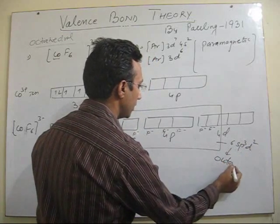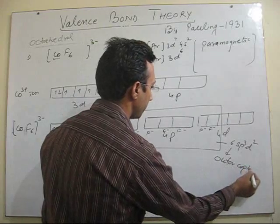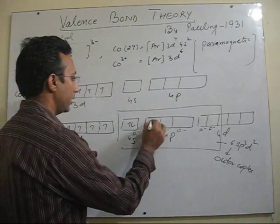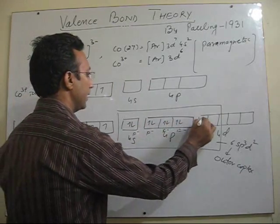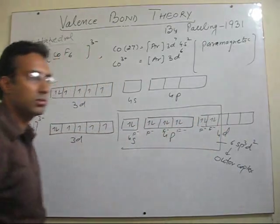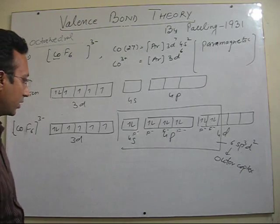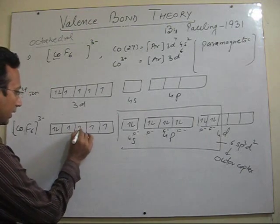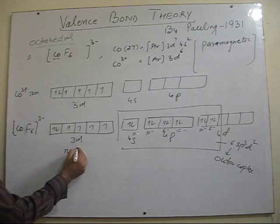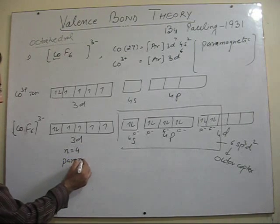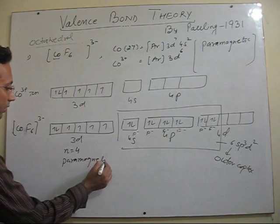Now in this case it is different. It is outer complex now. So here the ligands are lone pairs forming metal-ligand coordinate bonds, 6 coordinate bonds of same energy, same length and strength. So number of unpaired electrons if you count in this complex are 4. So this complex is paramagnetic in nature.